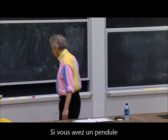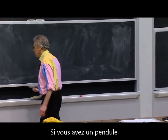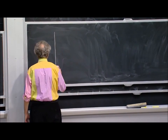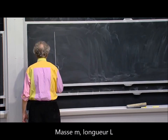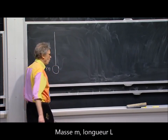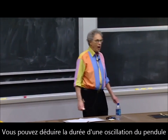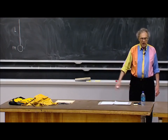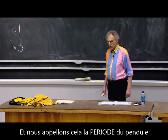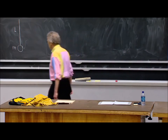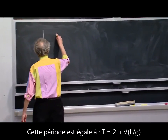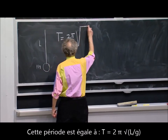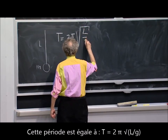If you have a pendulum — mass M, length L — you can derive how long it takes for the pendulum to make one complete oscillation. We call that the period of the pendulum. I derive in class that that period equals 2 pi times the square root of L over G.